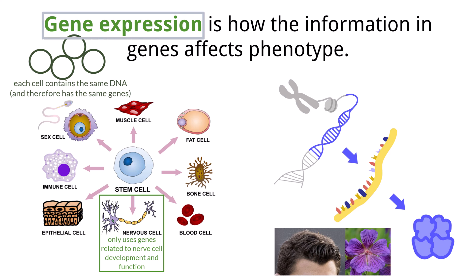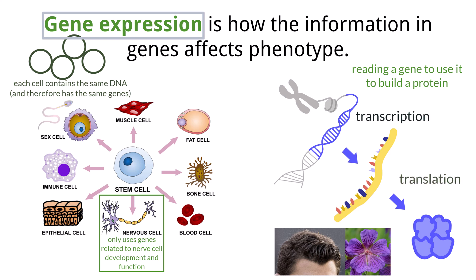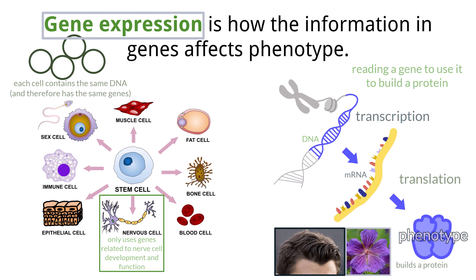Gene expression is defined as the process of reading a gene and building a protein that the organism can use. There are two processes, transcription and translation, discussed in another video that make this possible. During transcription, a messenger RNA or mRNA is made from DNA. During translation, the mRNA is used to build a protein. The proteins that are made help to determine an organism's phenotype — the set of characteristics that results when the genetic information from a parent is expressed. Humans may have a protein that results in the phenotype of a widow's peak, or a flower may have a phenotype of purple petals as a result of a protein that codes for that color.